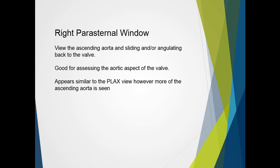The right parasternal window may also be used to assess the aortic valve. With the patient rolled into a right lateral decubitus position, a view of the ascending aorta is obtained and the user slides or angulates back down to the aortic valve. This is good for assessing the aortic aspect of the valve, particularly when there is significant valvular calcification or prosthetic valves. This view appears similar to a parasternal long axis, however showing a little more of the ascending aorta and less of the ventricle.